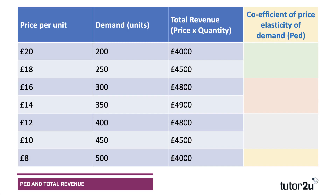There are various ways to calculate the coefficient of price elasticity of demand. Press the pause button and try some quick calculations as we move down a straight-line demand curve. In each case, price is falling by £2 and we're selling 50 extra units. Notice that when price falls from £20 to £18, demand goes up by 50 — the coefficient is 2.5, it's elastic, and total revenue goes up.